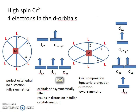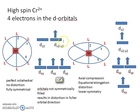Alternatively, we could have placed the fourth electron in the dx²-y² orbital instead of the dz². With the electron in dx²-y², that orbital is fuller than the dz² orbital, meaning there is more repulsion in the x-y direction. More repulsion causes the metal–donor atom bond length in the x-y direction to elongate, so there is elongation in the x-y direction.